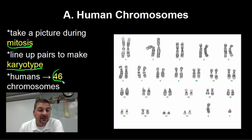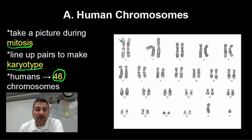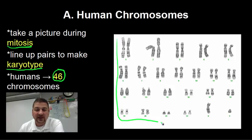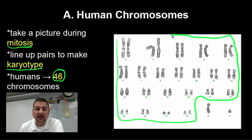Humans have 46 chromosomes in most of our cells, and scientists organize them from biggest to smallest. The first 22 pairs we call autosomes.